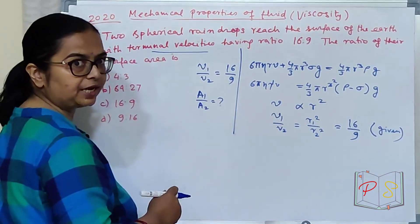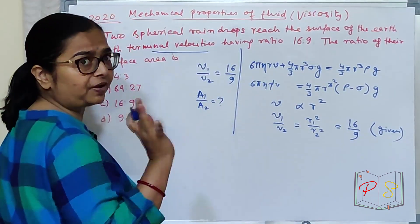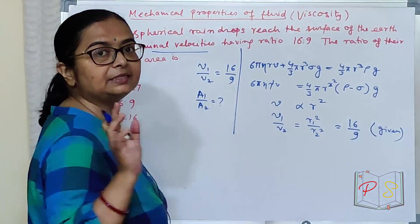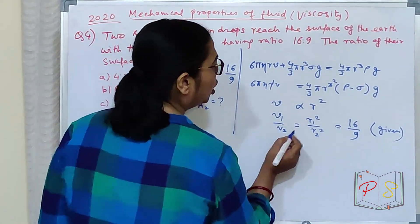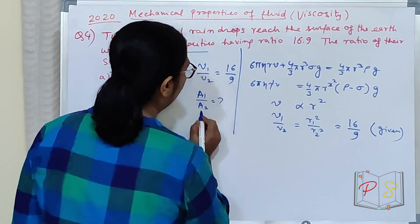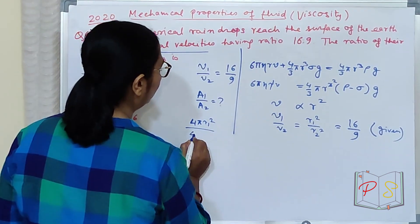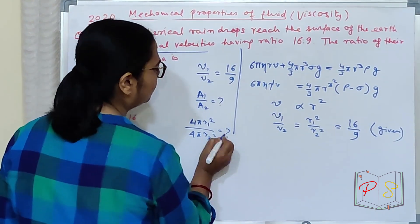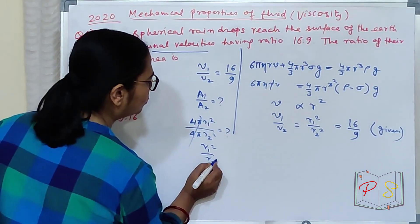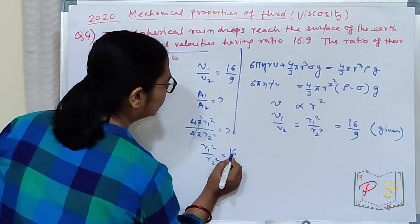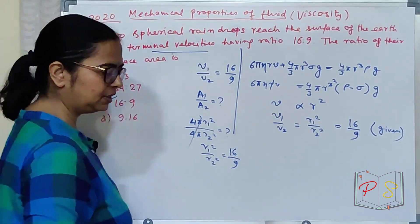Abhi aapko area ka ratio chahiye. Area kya hota hai? Area hota hai spherical. Sari spherical ball hai ha? This equation. Stokes law is valid for spherical body. Tho area kya hota hai? A1 by A2 kut. Ab kya likti sakte ho? 4 pi r1 square by 4 pi r2 square. Equal to kitna maanga hai? 4 pi 4 pi nikal do. Maanga hai actually r1 square by r2 square kitna hai? Abhi tu nikal hi diya. 16 by 9 hai. Boli diya. 16 by 9 hai. Tho akashi option is correct option.